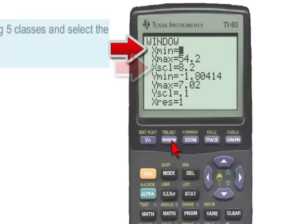The x minimum needs to be the lower class boundary of the first class, which we'll get by simply subtracting 0.5 from 5. So this will be 4.5.